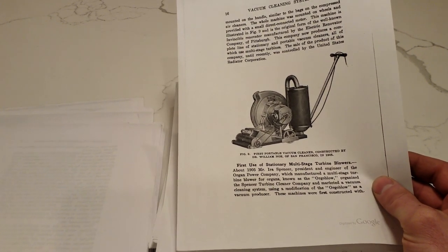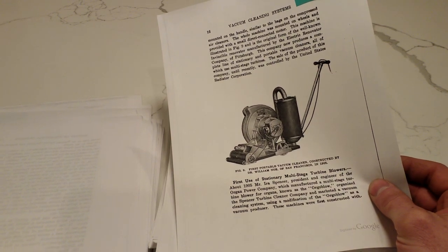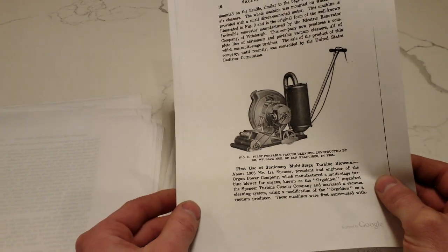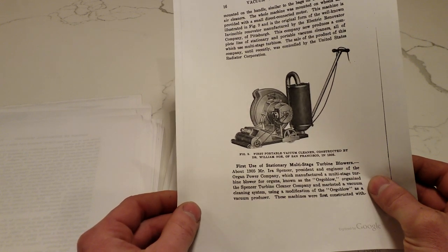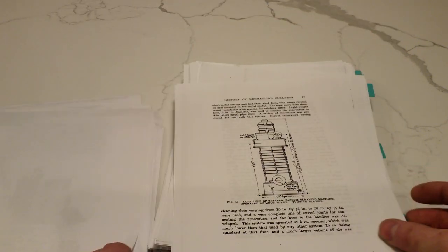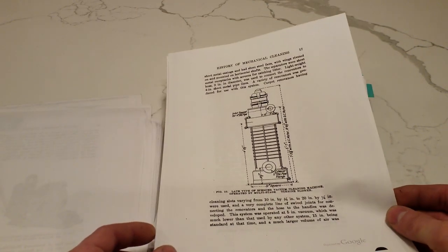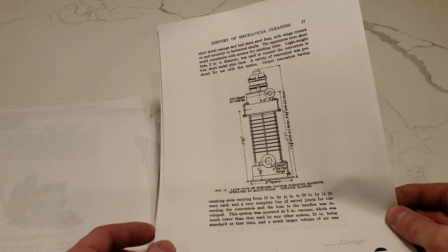Also, the first use of stationary multistage turbines, as opposed to the reciprocating air compressor type. Mr. Ira Spencer organized the Spencer Turbine Cleaner Company using a modification of the organ blower. Machines were first constructed with sheet metal casings and had sheet steel fans with wings riveted on and mounted on horizontal shafts.